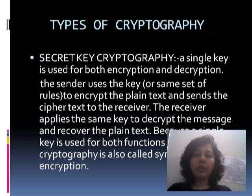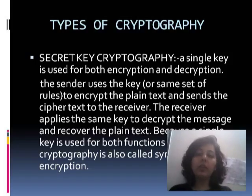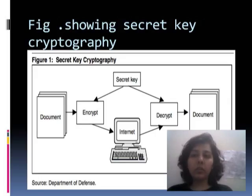Secret key cryptography: a single key is used for both encryption and decryption. The sender uses the key or same set of rules to encrypt the plain text and sends the cipher text to the receiver. The receiver applies the same key to decrypt the message and recover the plain text. Because a single key is used for both functions, secret key cryptography is also called symmetric encryption. Both the sender and receiver must know this key.